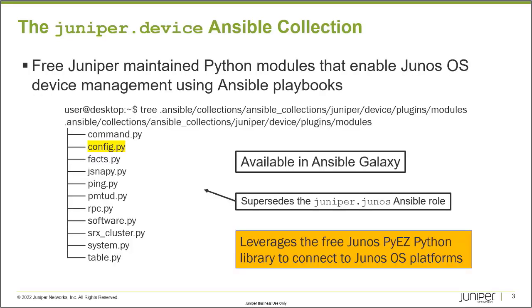The Juniper.Device Ansible Collection is a series of freely available Python modules that enable you to manage your Junos OS devices using Ansible Playbooks. They are available in Ansible Galaxy, and you can use the Ansible Galaxy install collection command to copy them to your system. You're then able to create playbooks that leverage these libraries to load configuration, execute operational mode commands, and perform device operations. The collection has a dependency — it leverages the PyEZ Python library to handle the actual connection to the managed devices.